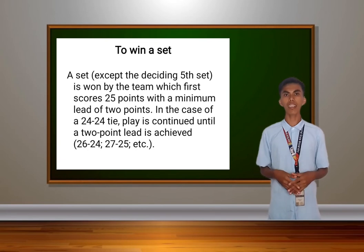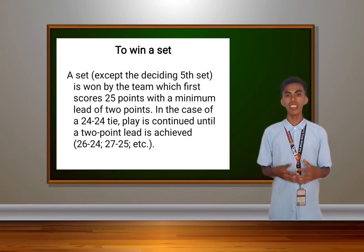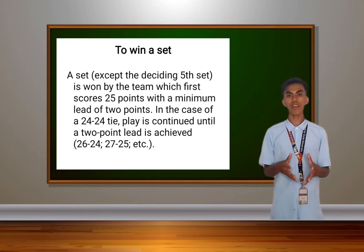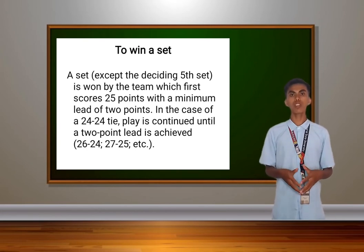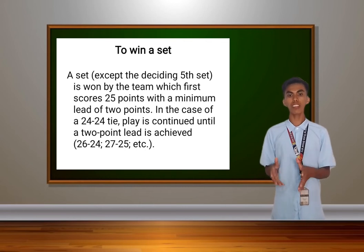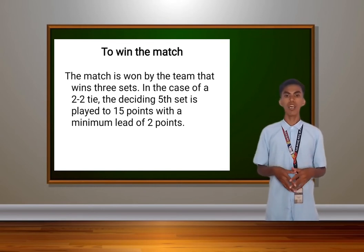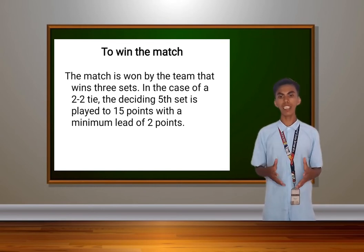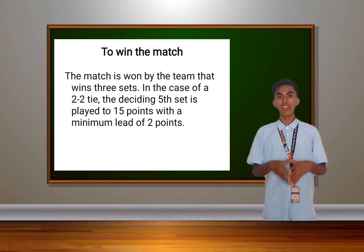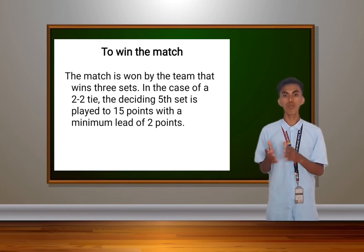Next is how to win the set. A set, except the deciding fifth set, is won by the team which first scores 25 points with a minimum lead of 2 points. In case of a 24-24 tie score, play continues until a 2-point lead is achieved. The match is won by the team that wins 3 sets. In the case of a 2-2 tie, the deciding fifth set is played to 15 points with a minimum lead of 2 points.